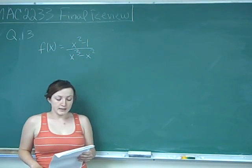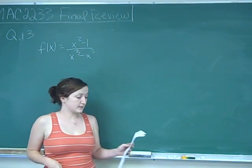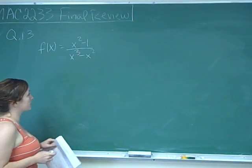So this is question number 13, and it asks us to find each vertical and horizontal asymptote of the function f(x) equals x squared minus 1 over x cubed minus x squared.